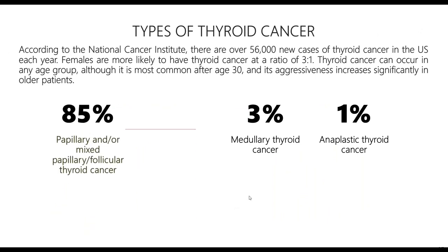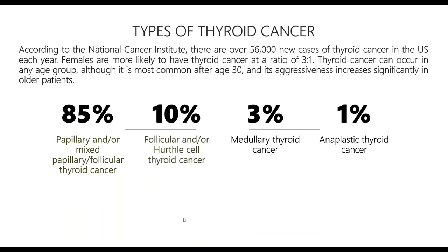According to the National Cancer Institute, there are about 56,000 new cases of thyroid cancer in the U.S. each year. Females are three times more likely to have thyroid cancer than males. Thyroid cancer can occur at any age but is most common after age 30, with aggressiveness increasing in older patients. Approximately 85% of patients have papillary or mixed papillary-follicular thyroid cancer, 10% have follicular or Hürthle cell cancer, 3% have medullary thyroid cancer, and less than 1% have anaplastic thyroid cancer.